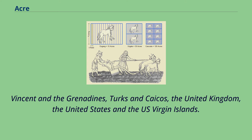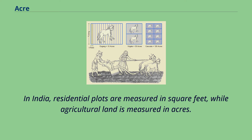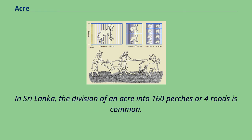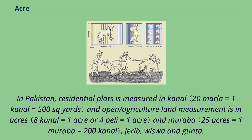In India, residential plots are measured in square feet, while agricultural land is measured in acres. In Sri Lanka, the division of an acre into 160 perches or four roods is common. In Pakistan, residential plots are measured in Kanal and open or agricultural land measurement is in acres, Muraba, Jareb, Wiswa, and Gunta.